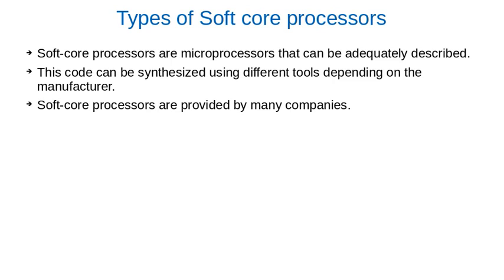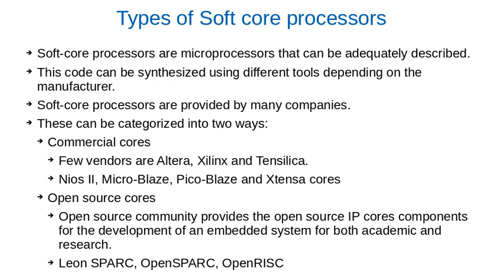There are basically two categories of soft core processors. The first category is called commercial cores and the second category is called open source cores. In commercial cores, there are vendors like Altera which provides Nios 2, Xilinx which provides MicroBlaze and PicoBlaze microcontrollers, and Tensilica which provides Xtensa cores. Open source cores are provided by an open source community offering IP core components for embedded system development for both academic and research purposes. Some examples include Leon, OpenSPARC, and OpenRISC. In future videos, we will discuss each soft core processor in detail.